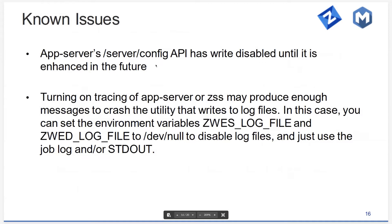There are a few known issues. The server config API of the app server had an ability for you to update the server configuration live, and that was based upon server.json. With its removal, we have to rethink how that API works. For now it's read only, and we will reintroduce write support when we figure out the best course for this API.